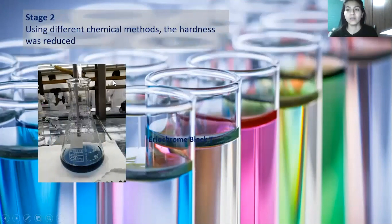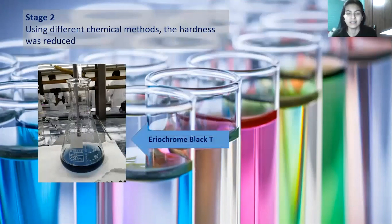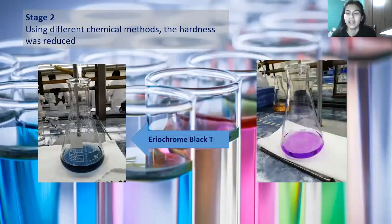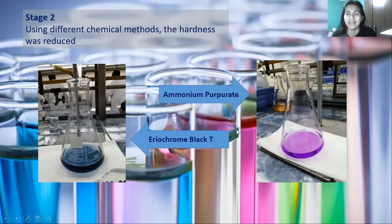We tested the water samples using these indicators: Eriochrome Black T or NET and ammonium purpureate or murexide.